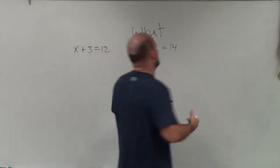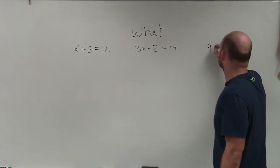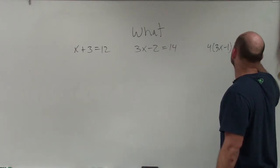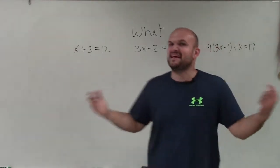Then we kept on getting on. Then we got into multi-step, where now we're bringing in parentheses. 3x minus 1 plus x equals 17. And I'm just making up some examples.